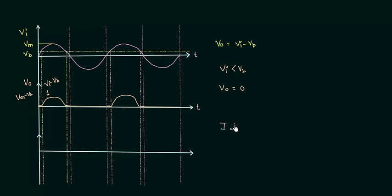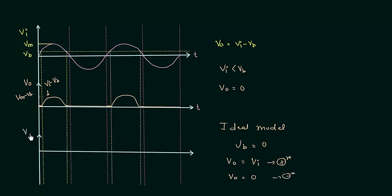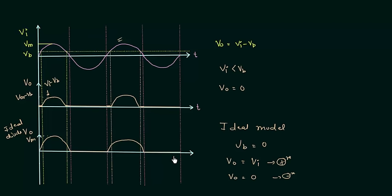If we consider the ideal model, the barrier potential VB is equal to zero. So the output voltage is simply equal to the input voltage for the positive half cycle and output voltage is zero for the negative half cycle. If we plot VO for the ideal diode, the maximum voltage equals VM, and the waveform is identical to the input voltage for the positive half cycle. For the negative half cycle the diode remains off. I will use this ideal waveform to obtain the expression for average output voltage.